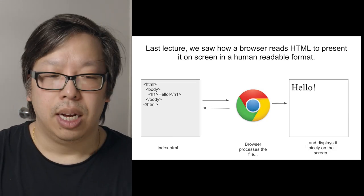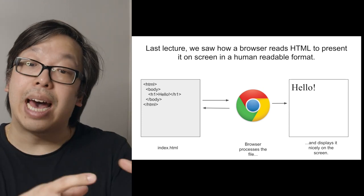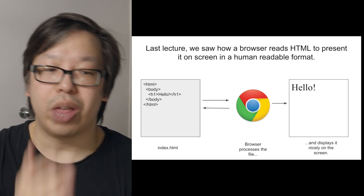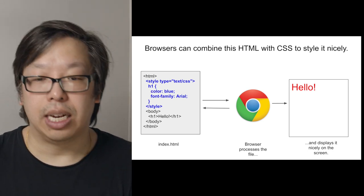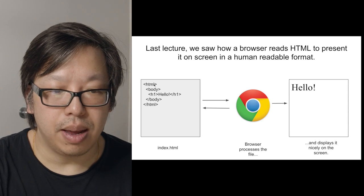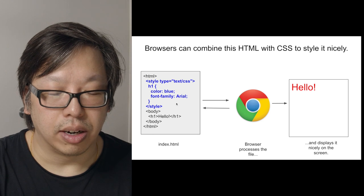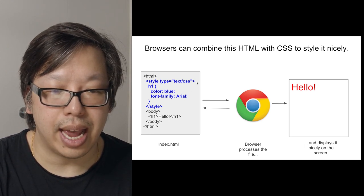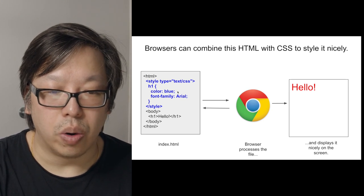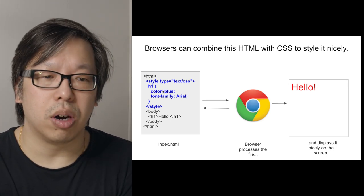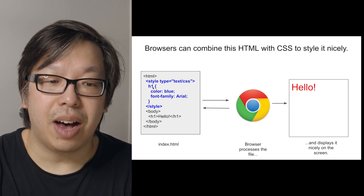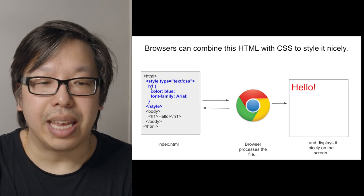Last lecture we talked about how browsers interpret HTML — we have HTML on the left, a browser reads and interprets it, and presents it in a human-readable fashion. Well, CSS you can simply add to your HTML. You can see here we have this HTML code and right in between the HTML and the body I added a style tag — an opening style tag and a closing style tag — with CSS code inside. The way it works is you specify what you want to modify using a selector.